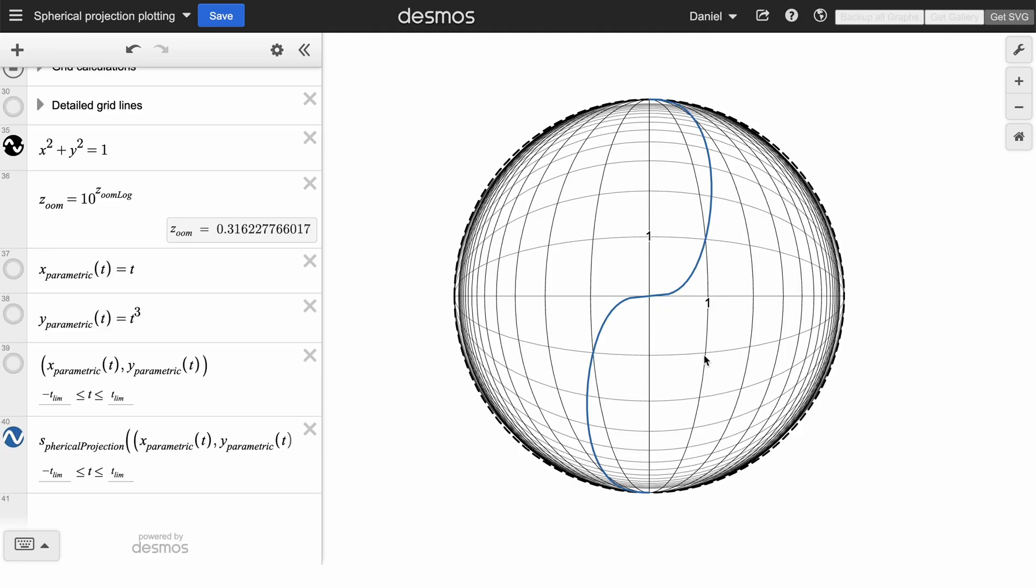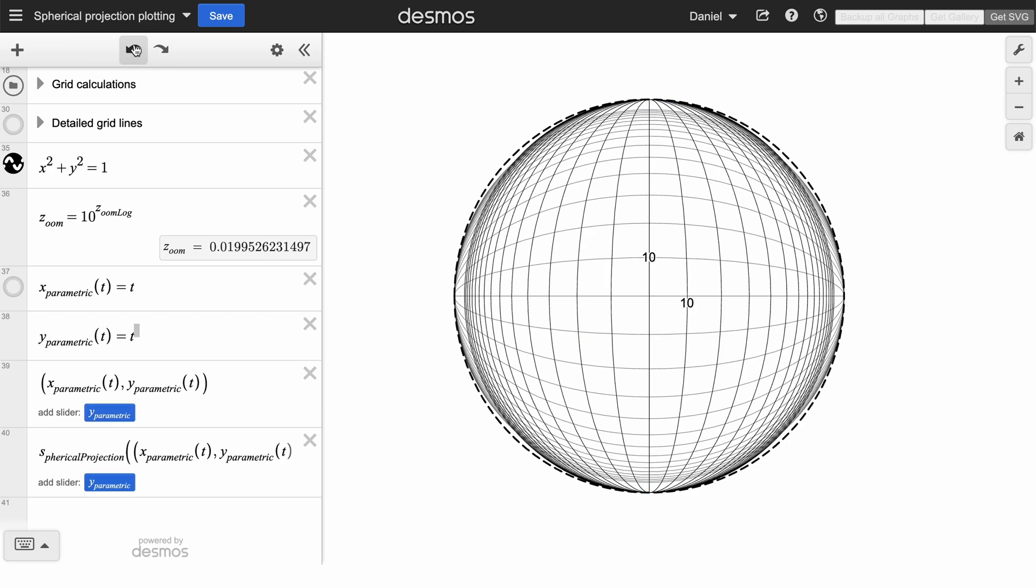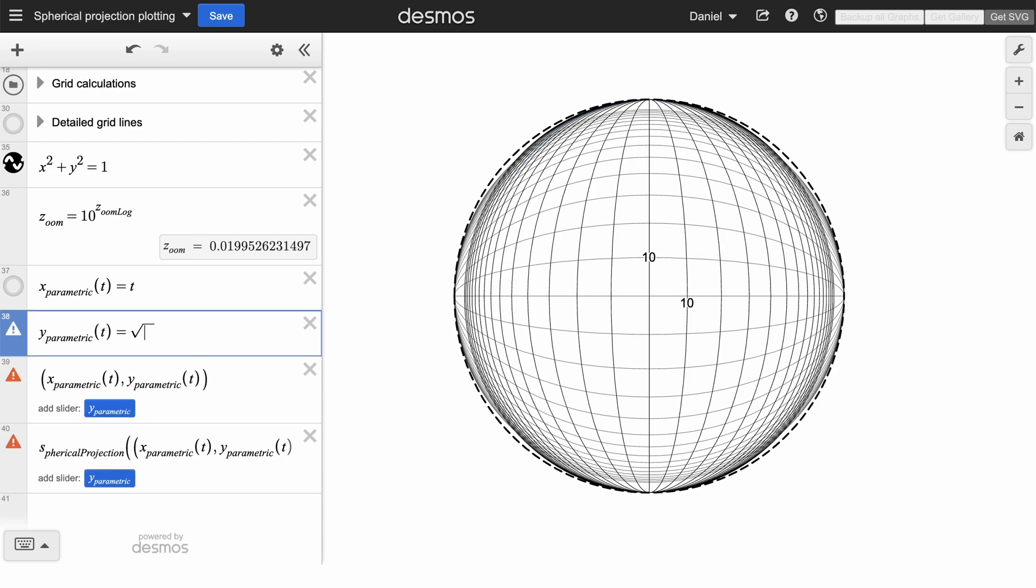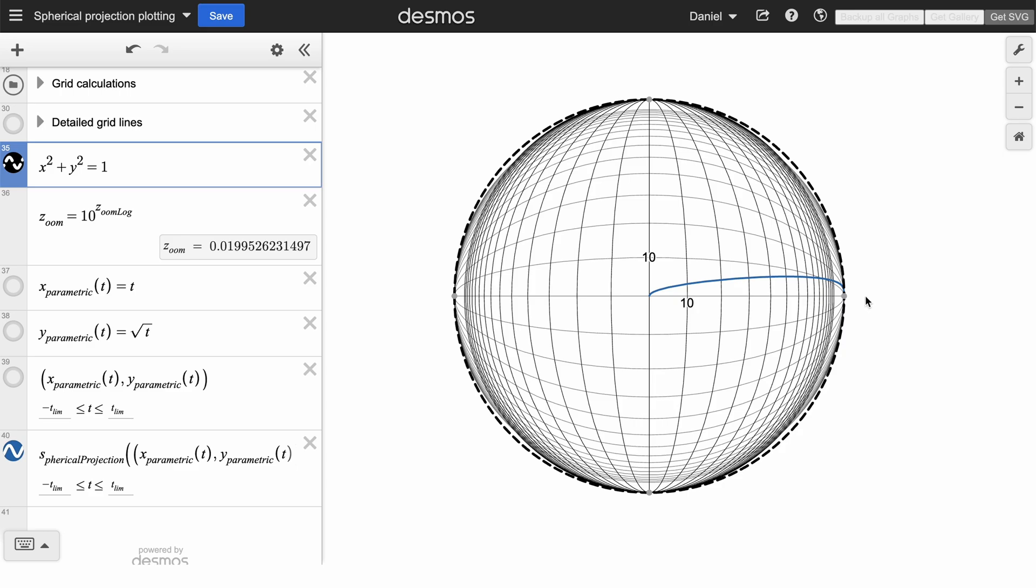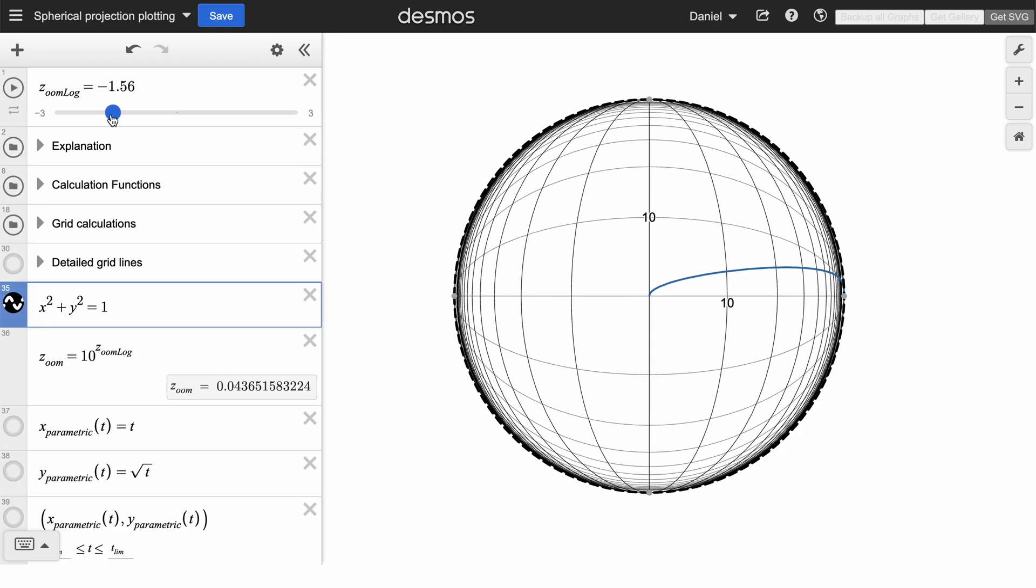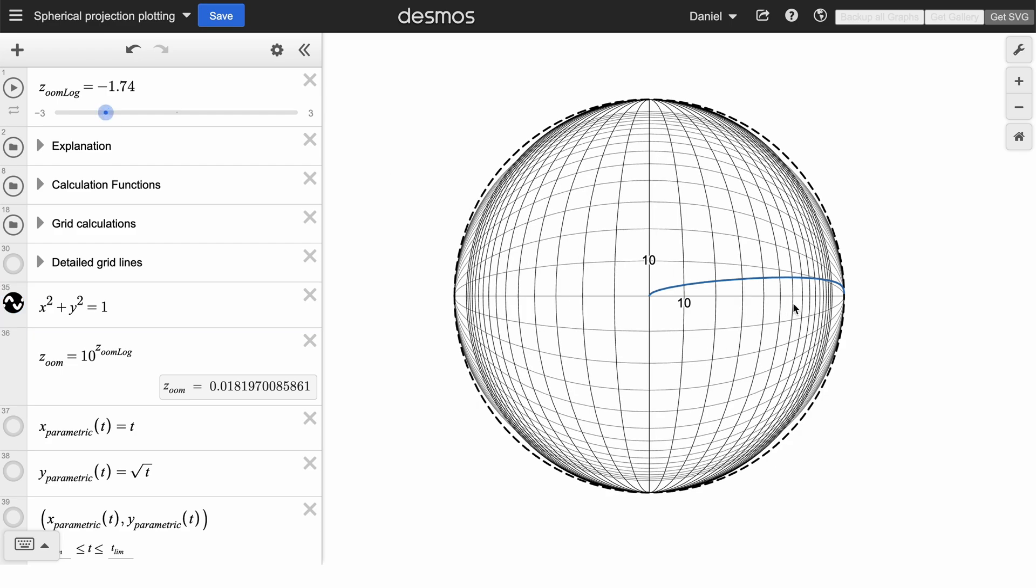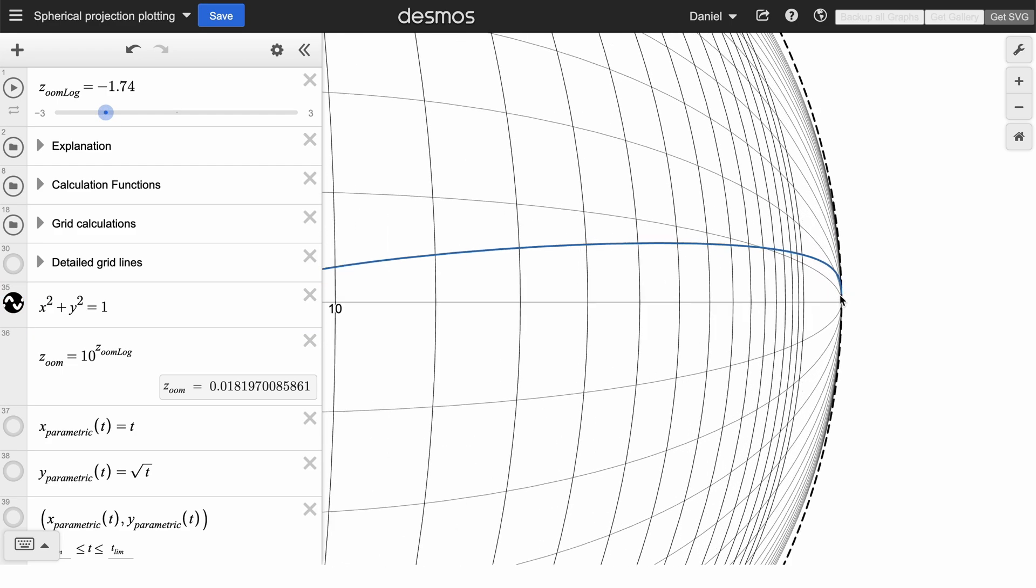And this works with any parametric function that you can think of. Here's the function at the start of the video, and you can type in whatever else you want here as well. For example, we can see what the square root of x looks like, and how it seems to approach this point over here as it goes off to infinity. And this isn't saying that the y value becomes zero when the x value goes off to infinity. It's just that the x value increases much quicker than the y value, so it appears to approach this point over here.